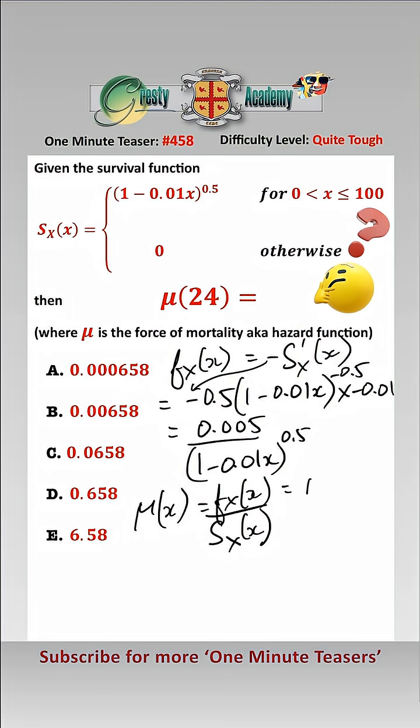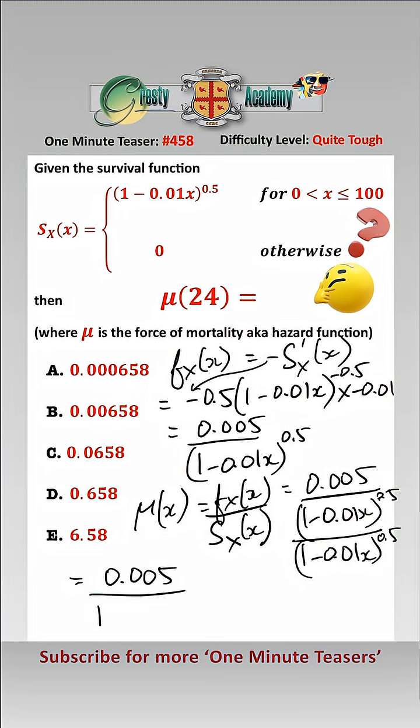which equals 0.005 over 1 minus 0.01x to the 0.5 over 1 minus 0.01x to the 0.5, which equals 0.005 over 1 minus 0.01x, so that is mu of x.